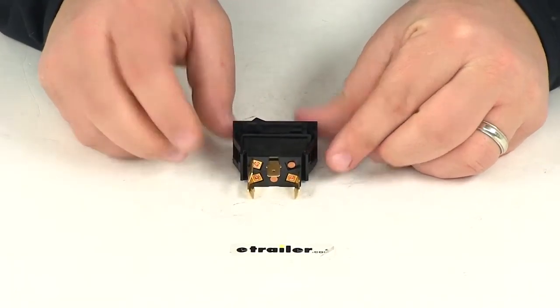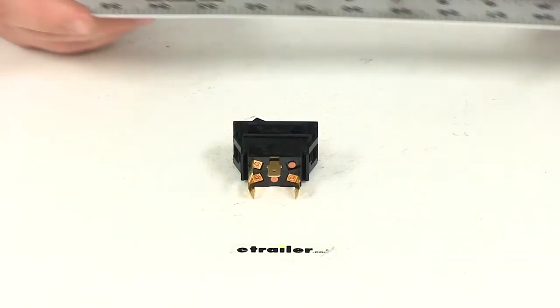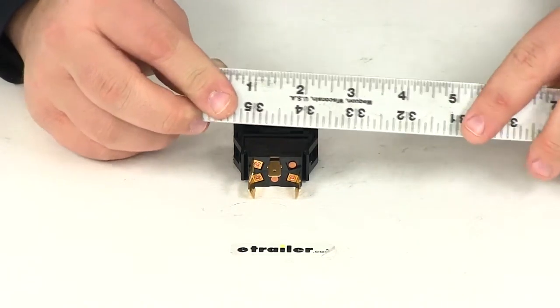The red pilot light comes on when the switch is turned on. You get four terminals on the back of the housing, and they're blade style terminals.